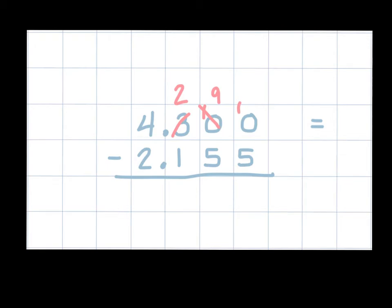And now I can subtract. So I can take 5 away from 10, giving me an answer of 5. And now looking over to the hundredths place, I can take 5 away from 9, giving me an answer of 4. And if I move to the tenths place, I can take 1 away from 2, giving me an answer of 1. And if I look over to the ones place, I can take 2 away from 4, giving me a 2.